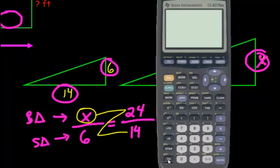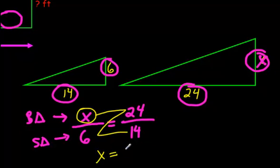So let's try it. So we would go 6 times 24. And it doesn't matter what order you do it in. You could also go 24 times 6. It doesn't matter. And then divide by 14. And our answer would be 10.2. So x is 10.2. We now know the height of this triangle right here. 10.2.